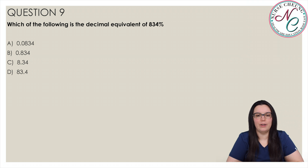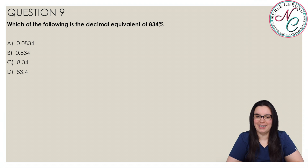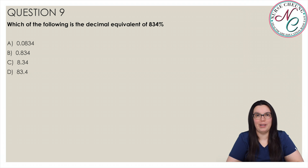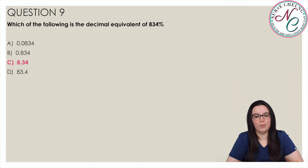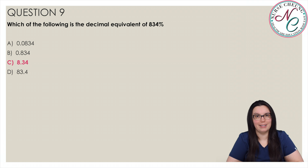Which of the following is the decimal equivalent to 834%? Is it A, 0.0834; B, 0.834; C, 8.34; or D, 83.4? The correct answer is C, 8.34. To convert a percentage to a decimal, we move the decimal point to the left two places: 834% becomes 8.34.